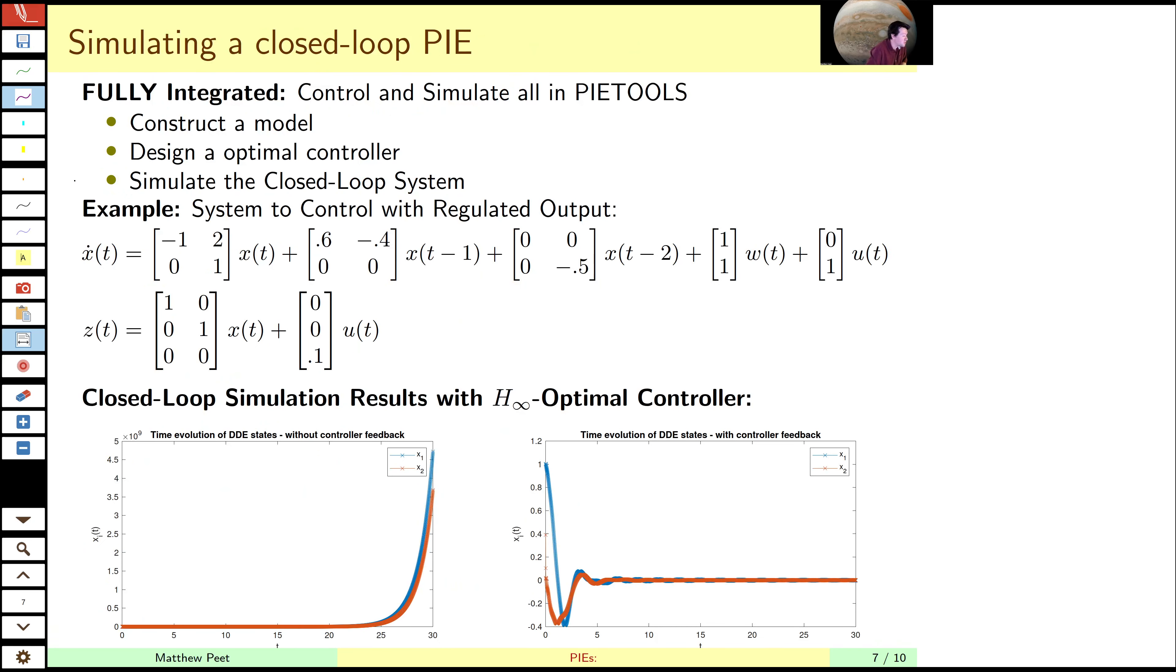To illustrate this work, the pi tools allows you to declare your model, find the optimal controller, and then simulate it all in a unified framework. For example, here's a time delay system we use, here's the input, here's a disturbance, here's our regulated output. We find an h-infinity optimal controller for this system, and then we can just plug that directly into PiSIM and get the closed loop simulation response and the open loop response.